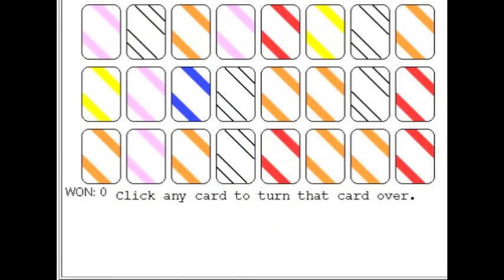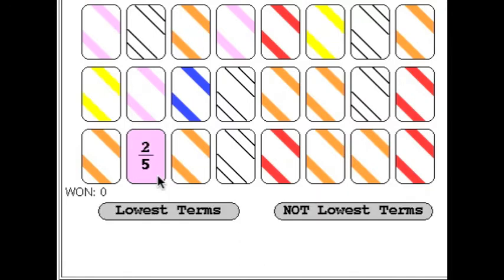In the lowest terms game, the player is given twenty-four fraction playing cards face-down. The player turns over one card and clicks one of the two buttons: lowest terms and not lowest terms.